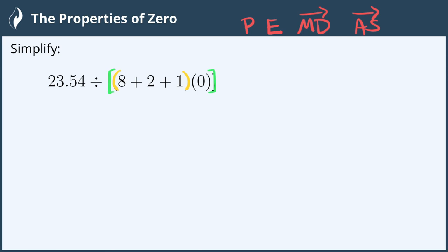So inside this, we have 8 plus 2 plus 1. Working from left to right, 8 plus 2 gives us 10, plus 1 is 11. And then we copy everything down, since we haven't done any of those operations yet.